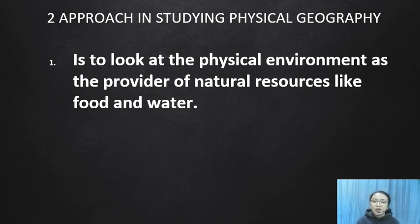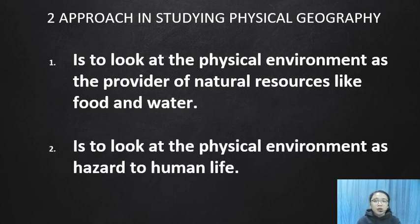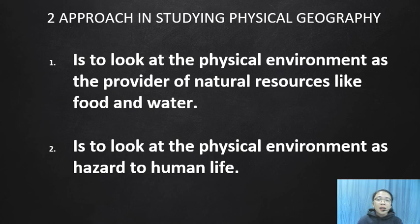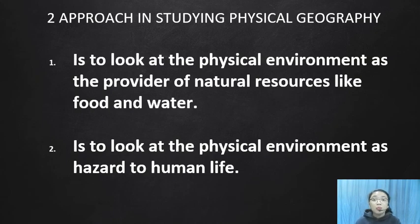The second approach is to look at the physical environment as a hazard to human life. We experience calamities like typhoons, landslides, and earthquakes — these are very dangerous natural events. For example, typhoons cause flooding, earthquakes damage homes and split the ground, and landslides bring falling earth.